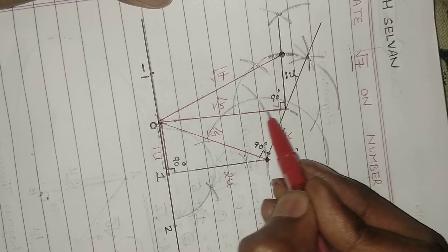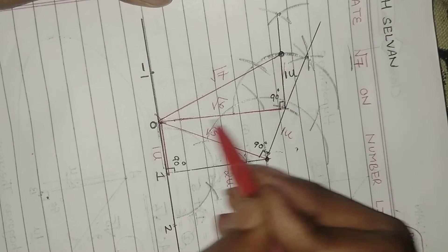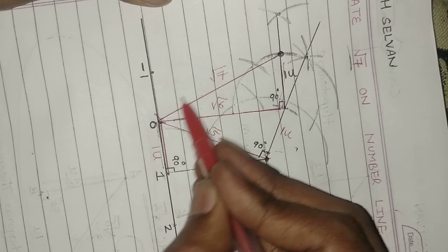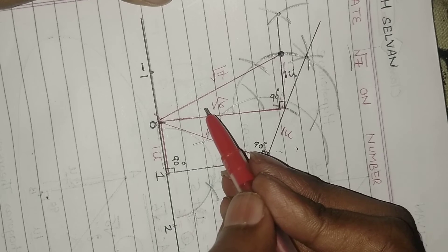This is the root 6 and this is 1 unit. Root 6² + 1² will give root 7 by my Pythagoras theorem.